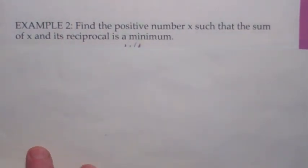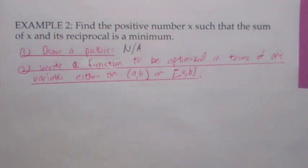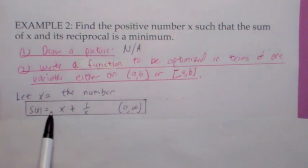You want to find x such that the sum of x and its reciprocal is a minimum. You're trying to write the sum function. Call this s. It's going to be the sum of x and 1 over x. So there it is.